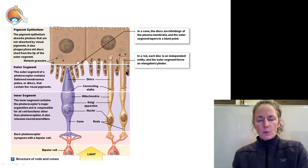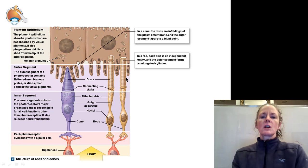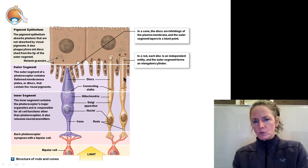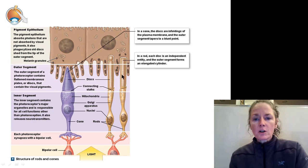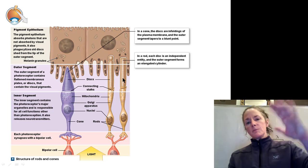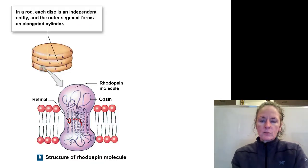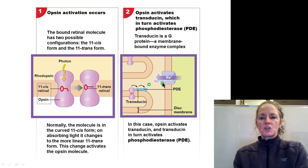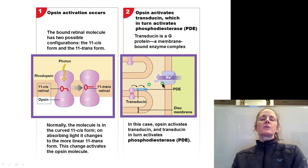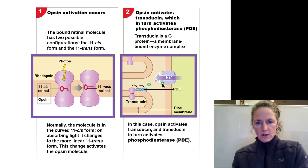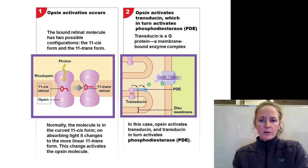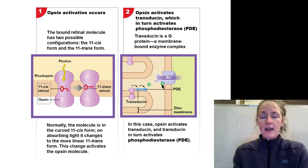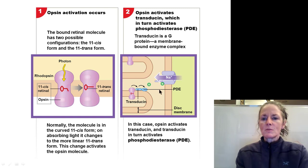Instead of having the typical negative 70 millivolt resting membrane voltage of a neuron, this dark current causes the membrane voltage to be depolarized to about negative 40 millivolts. The reason for this is cyclic GMP. Cyclic GMP is very similar to cyclic AMP, but instead of adenosine monophosphate we have guanosine monophosphate. It's still a nucleotide and very similar in concept. Cyclic GMP is what keeps our sodium channels open, so as long as there's cyclic GMP in the cytoplasm, sodium will come in.